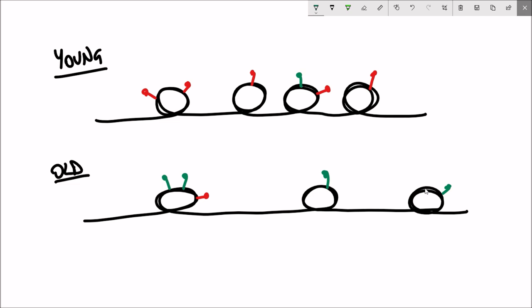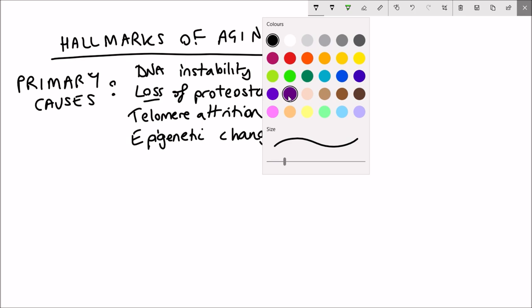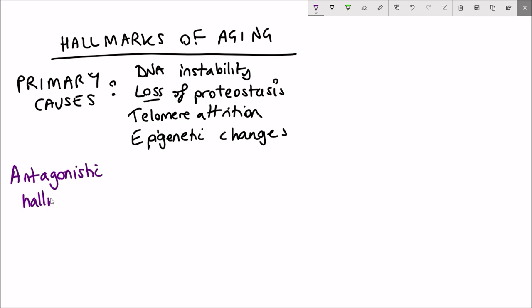This can then alter the gene expression patterns and affect the stability of the genome. So now let's look at the antagonistic hallmarks. These are the hallmarks that kind of respond to the damage caused.